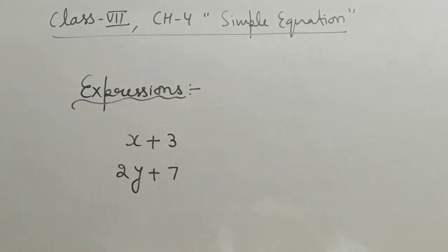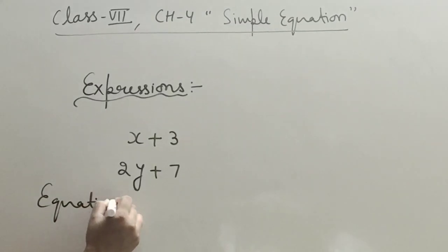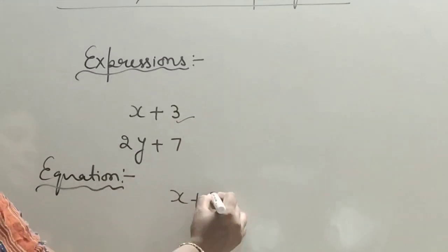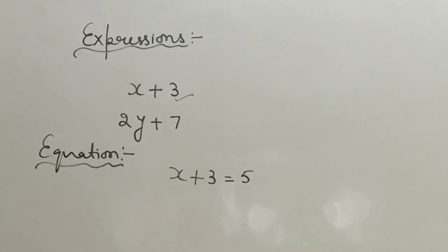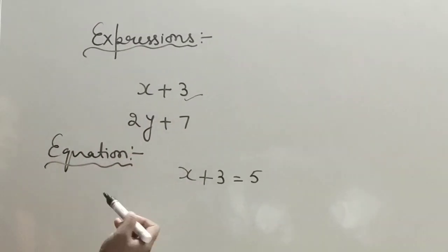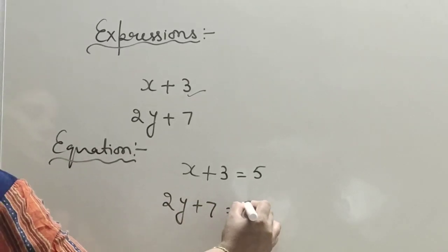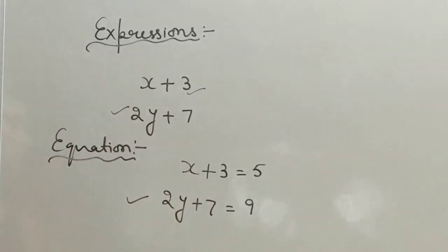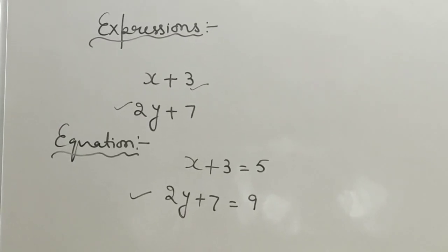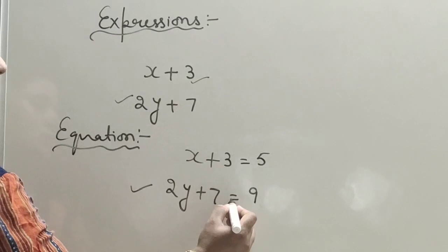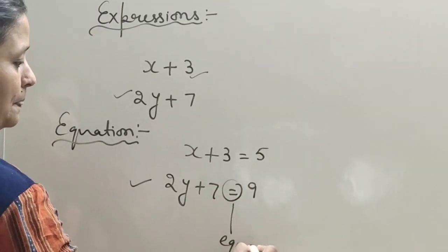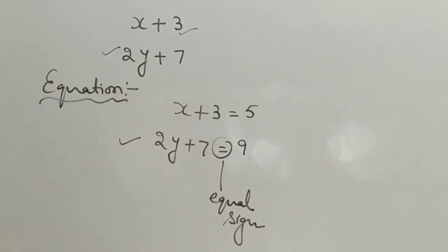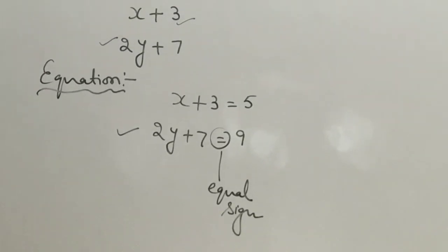Now we come to the equation. The chapter name is Simple Equations. What is an equation? If I put in this algebraic expression x plus 3 is equal to 5, this expression is converted into an equation. Similarly, 2y plus 7 is equal to 9 — this expression is also converted into an equation. The difference between expression and equation is that an equation has an equal sign. When an expression has an equal sign, it is converted into an equation.